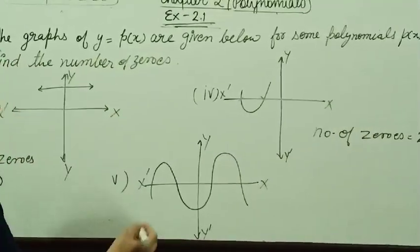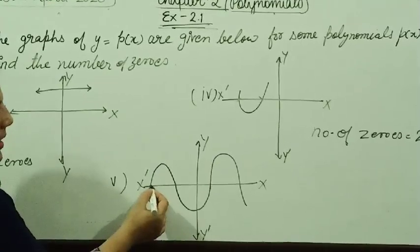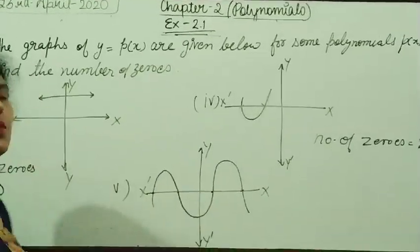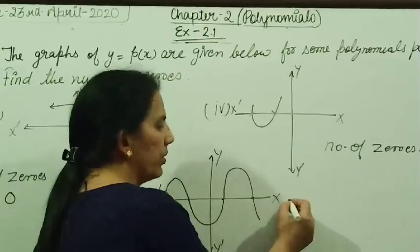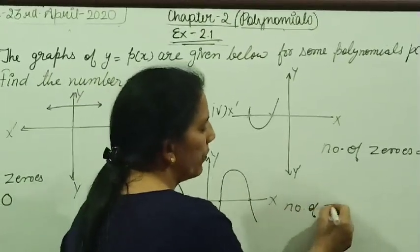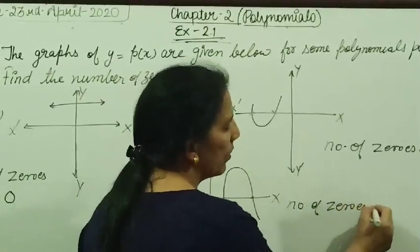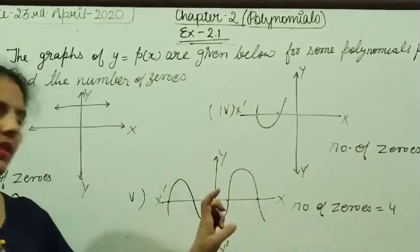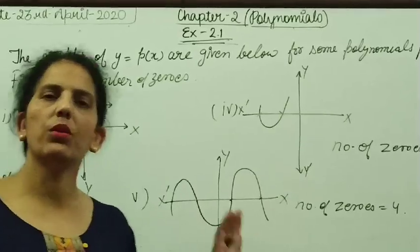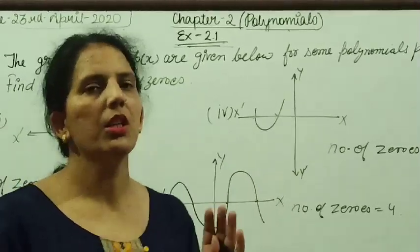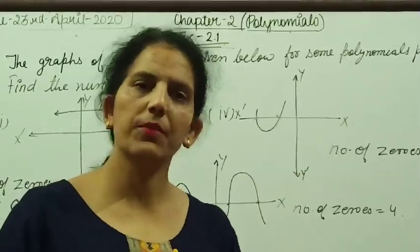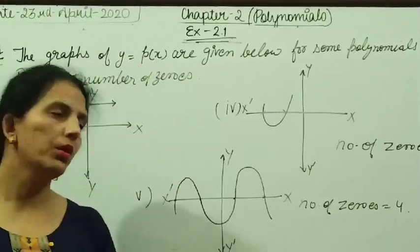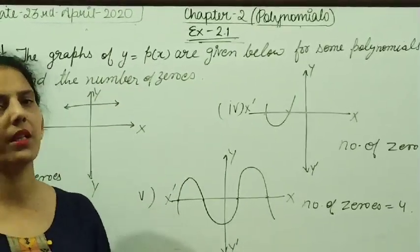Looking at the last graph, it is touching the x-axis at 1, 2, 3, 4 places. So, the number of zeros is 4. Hence this exercise is very easy; you can find out all the solutions to all the questions — that will be your homework. That's all from my side. We will meet you once again in our next lecture. Thank you.